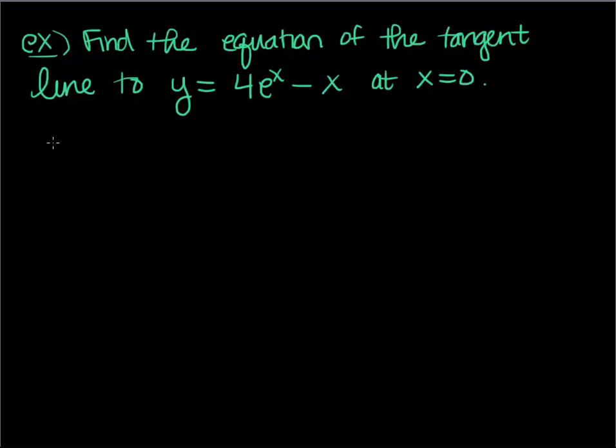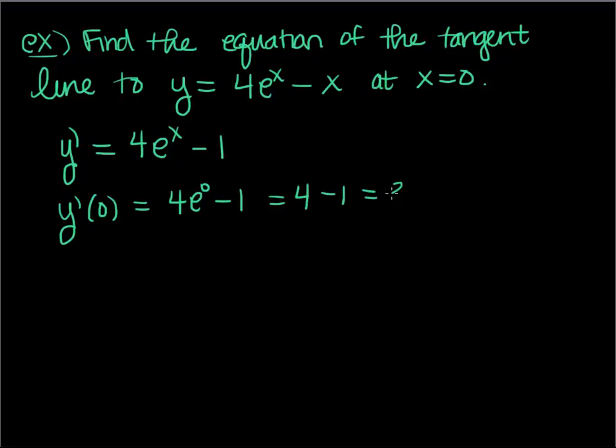The equation of a tangent line—I need the derivative. So y' = the derivative of 4e^x is just 4e^x, the derivative of x is 1. I'm going to plug in 0 for x. That's 4e^0—remember anything to the 0 power is 1—so I get 4 - 1 which is 3. That's my slope.